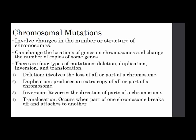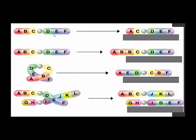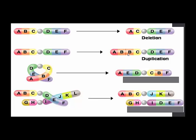Do not confuse these with point mutations — deletion here refers strictly to chromosomes. Here are examples using chromosome sections labeled A through F. Deletion: ABCDEF becomes ACDEF — the B segment has been deleted. Duplication: ABCDEF should read ABCDEF, but instead reads with B duplicated. Inversion: ABCDEF should read in order, but instead reads AEDCBF — it's been inverted, not in the correct order.